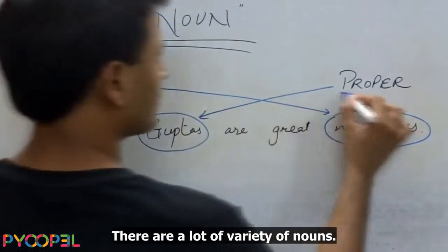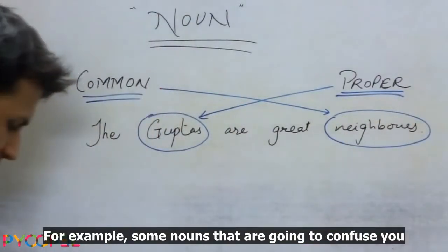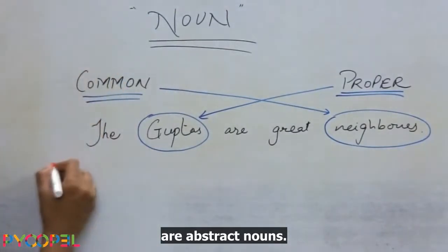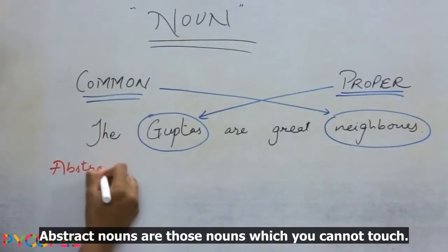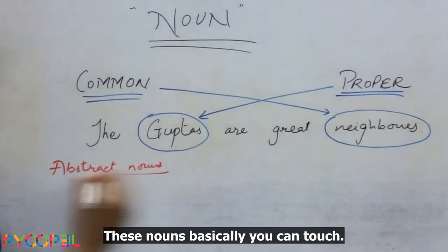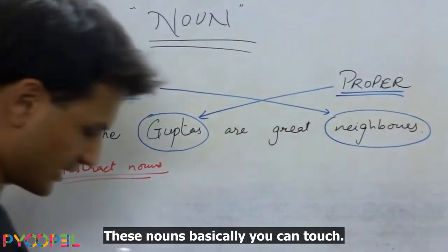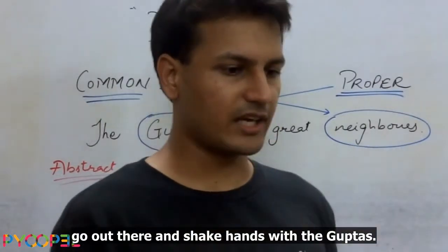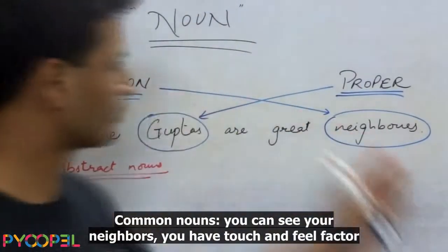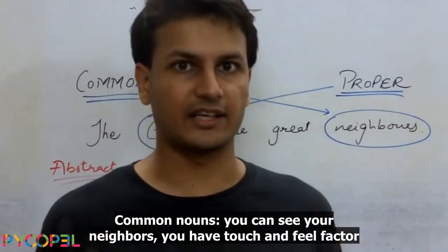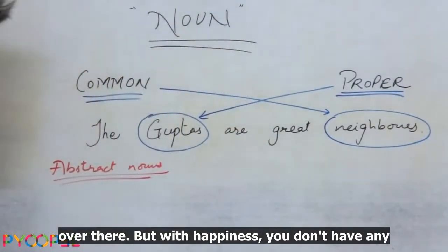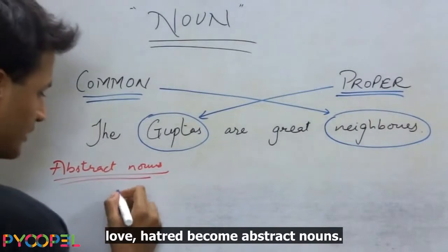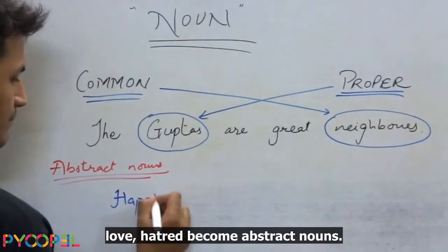There are a lot of varieties of nouns. Some nouns that are going to confuse you are abstract nouns. Abstract nouns are those which you cannot touch. With proper and common nouns you have a touch-and-feel factor — you can shake hands with the Guptas, you can see your neighbours. But with happiness, you don't have any touch-and-feel factor. Happiness, reality, love, and hatred are abstract nouns.